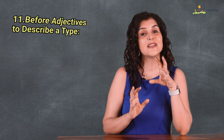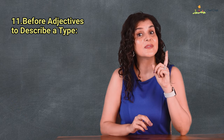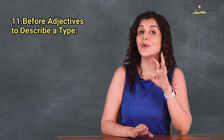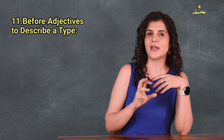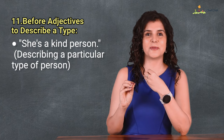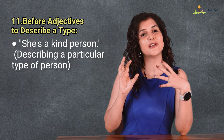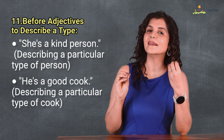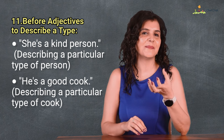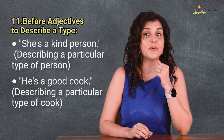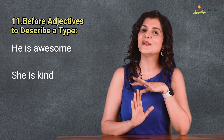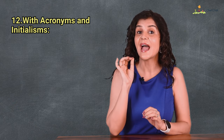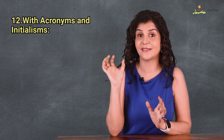Collective nouns are singular in nature, so we can use indefinite articles before them: a box of matches, a deck of cards, a bar of soap, a herd of cows. If you're describing something or someone using an adjective to describe a type, we use a and an: she is a kind person — describing a particular type of person; he is a good cook. But if we want to say he is awesome or she is kind, we don't require articles.